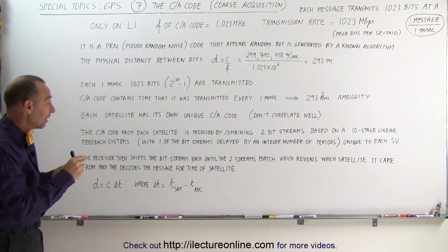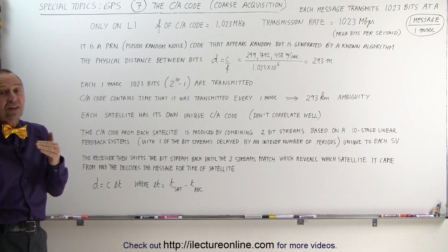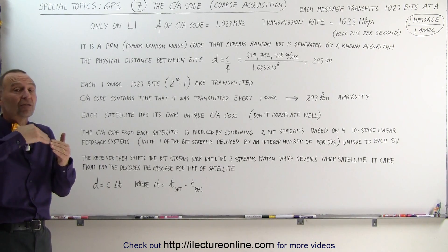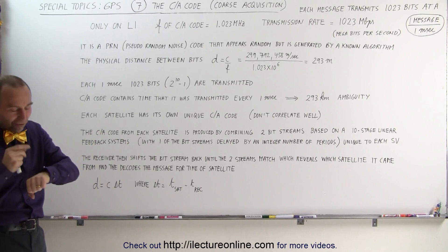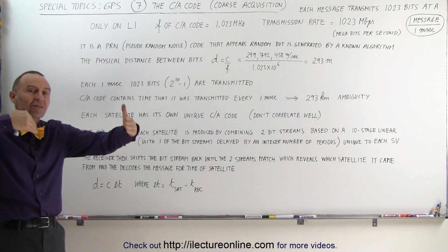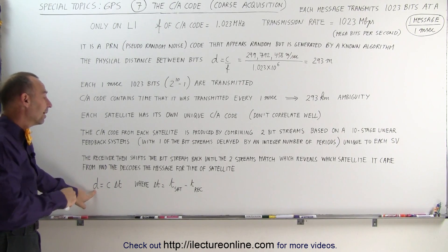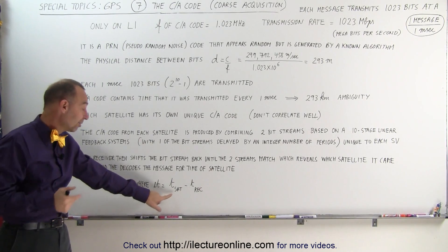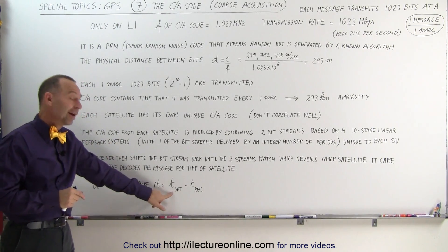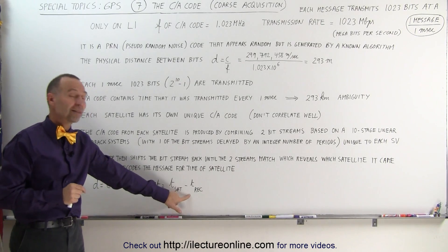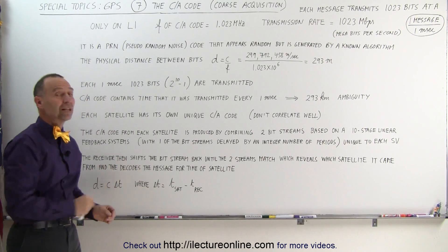From that we can know which satellite it came from and decode the message. Once we know what satellite it came from, we can say the time to that satellite was this. We then know the position of the satellite because we have information about it, and the receiver looks at its own clock, takes the time difference, multiplies that times the speed of light, and knows the distance to the satellite. The difference in time is the time of the satellite minus the time of the receiver. The time of the satellite is really accurate, but the time of the receiver is not so accurate, and therefore there is a certain amount of uncertainty in that distance.